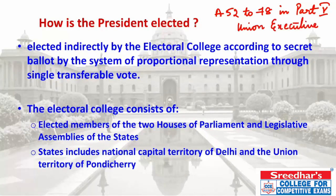Part 5 mentions the Head of the Indian State, the President, and the powers related to the President. The President of India is elected indirectly — he is not directly elected by the people.